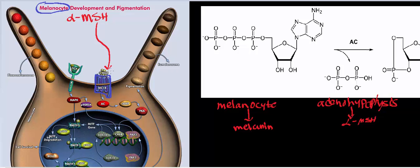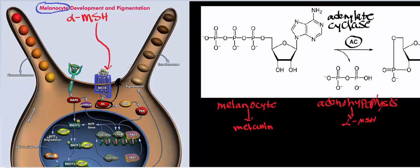There is a mistake in this picture — the enzyme shown here, abbreviated AC, is called adenylate cyclase. It's an extremely important enzyme in biosignaling. The mistake is that adenylate cyclase is actually a membranous enzyme, so it's located in the membrane. Whenever alpha-melanocyte-stimulating hormone binds to the receptor, it ultimately activates adenylate cyclase.